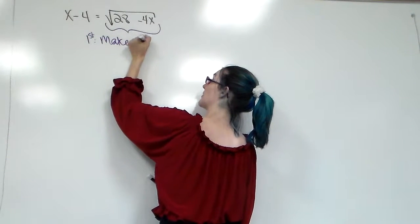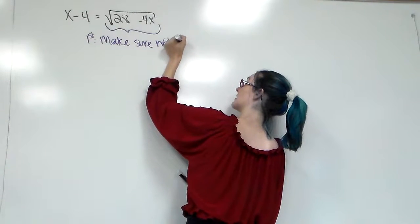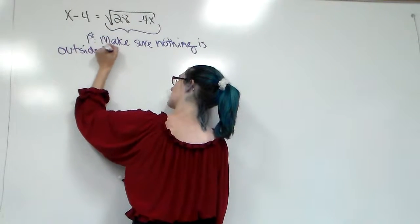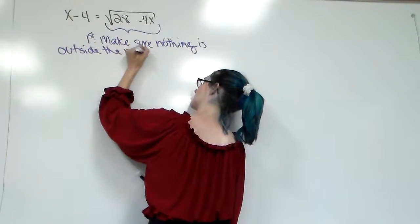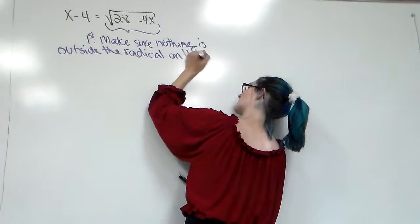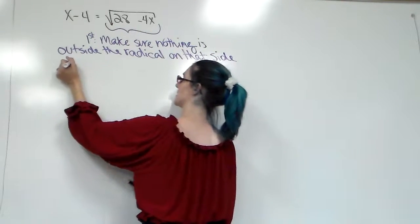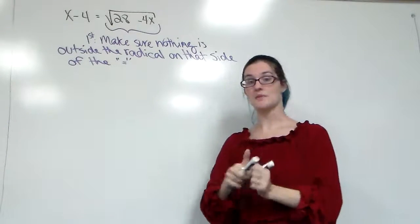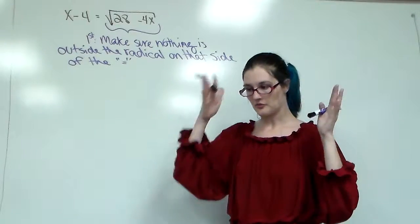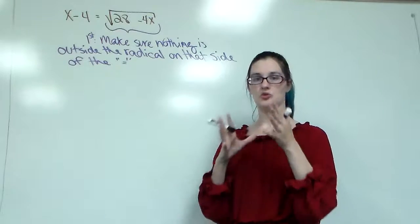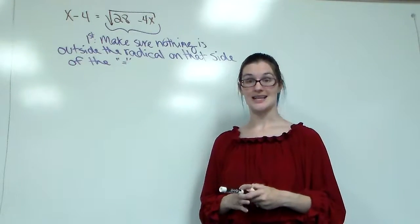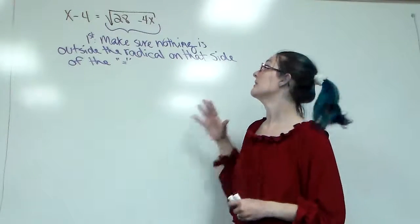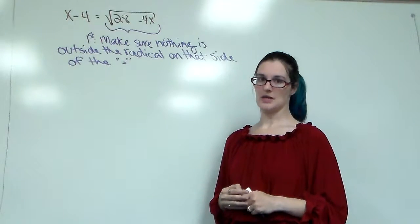So first, make sure nothing is outside the radical on that side of the equal sign. The radical symbol can be on the left or the right, it doesn't matter. Just from the equal sign on that side, you want ideally only the radical symbol and the inside. Again, you can have a number up front in front of it, it's just going to complicate things a little bit. You can get rid of it evenly and make your life easier.